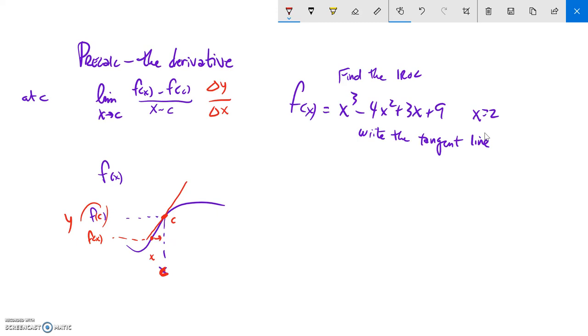But the limit as x approaches c, we slide this closer and closer to that, so we get these lines that are closer and closer to this line. And then if we find the limit as x is c, then we'll know how steep it is at that point.